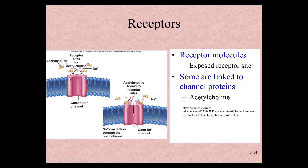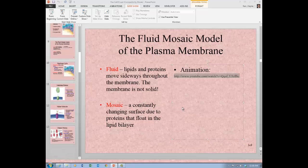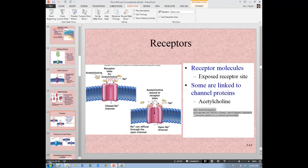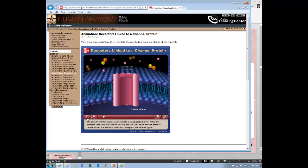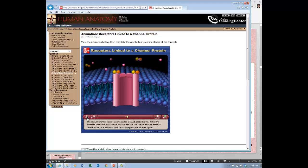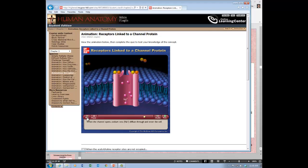Acetylcholine is the ligand in this case. When it binds, it causes the channel to open and allow sodium to come through. Acetylcholine isn't passing into the cell — it's only acting as a key to open up the channel and allow sodium in. The animation shows this: when the receptor sites are not occupied by acetylcholine, the sodium channel remains closed; when acetylcholine binds to its receptors, the channel opens and sodium ions diffuse through and enter the cell — a ligand-gated ion channel.